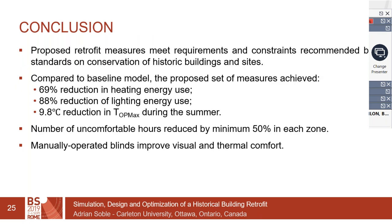In conclusion, the proposed retrofit measures meet the requirements and constraints recommended by the standards of conservation in the area. With our combination of optimized interventions, we achieved a 69% reduction in heating energy use, an 88% reduction in lighting energy use, a 9.8°C reduction in maximum operative temperature during summer, and a 50% reduction in uncomfortable hours in each zone. We believe manually operated blinds would further improve visual and thermal comfort.